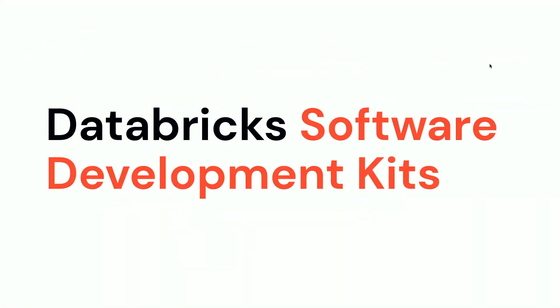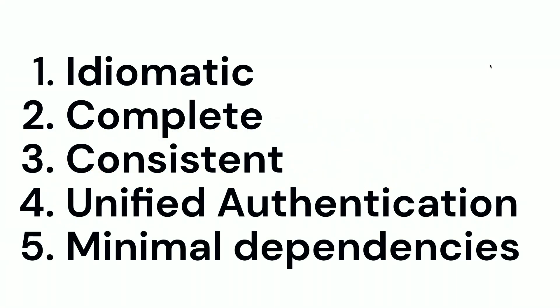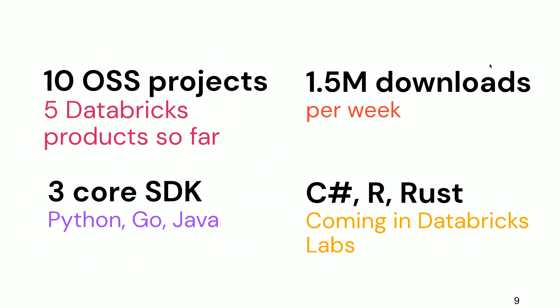Databricks software development kits are meant to simplify your journey. It usually takes three to four months to integrate with Databricks, and with SDKs we want to reduce this to three weeks. All Databricks SDKs are idiomatic, complete, consistent, with unified client authentication and minimal dependencies. We have 10 OSS projects and five Databricks products integrated through Python, Go, and Java, with 1.5 million downloads every week. C#, R, and Rust are coming soon.